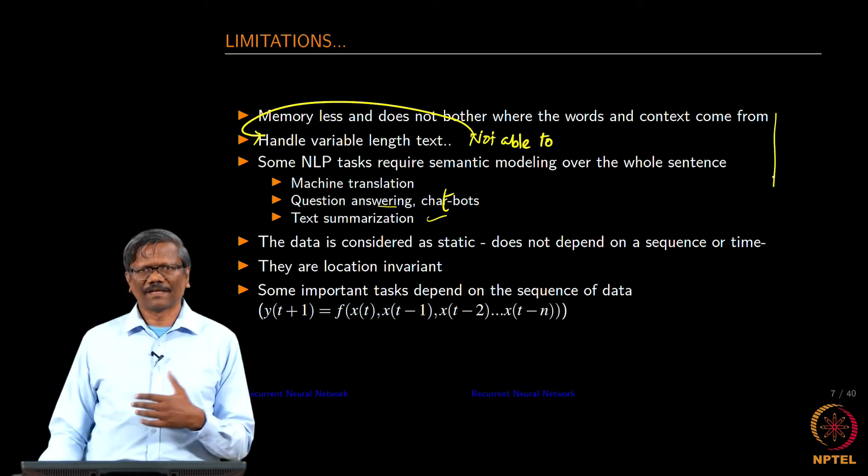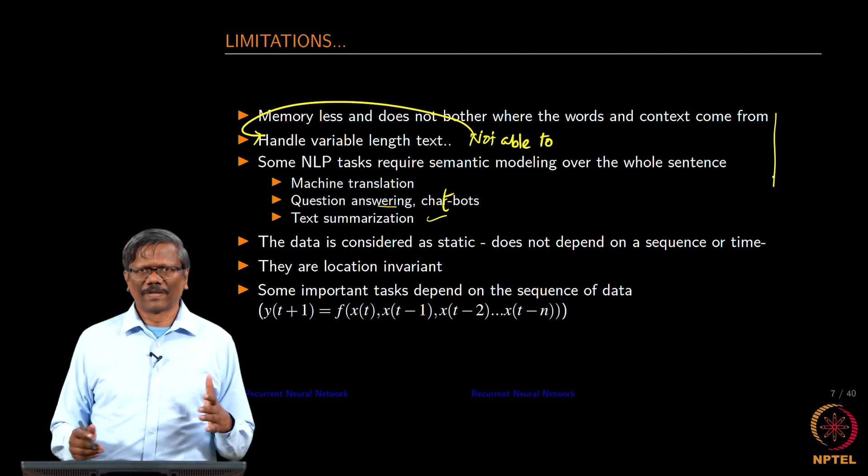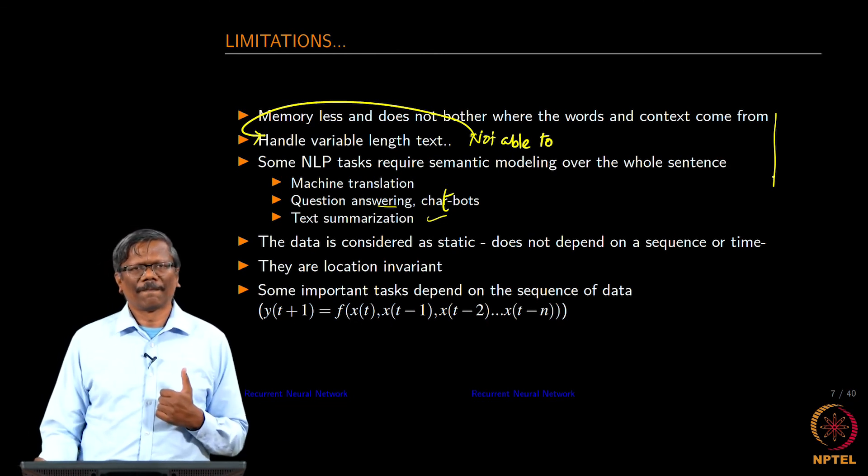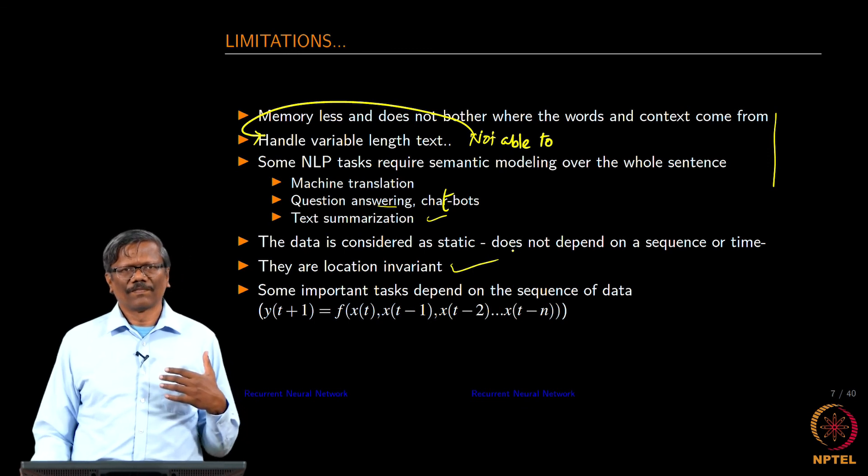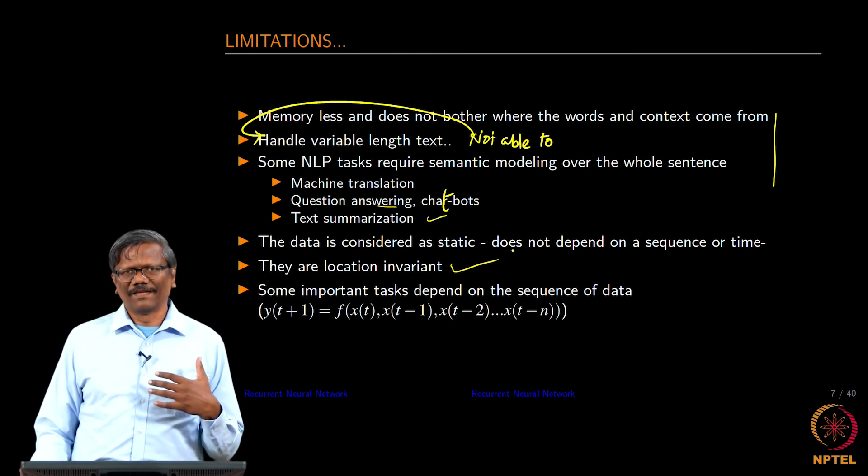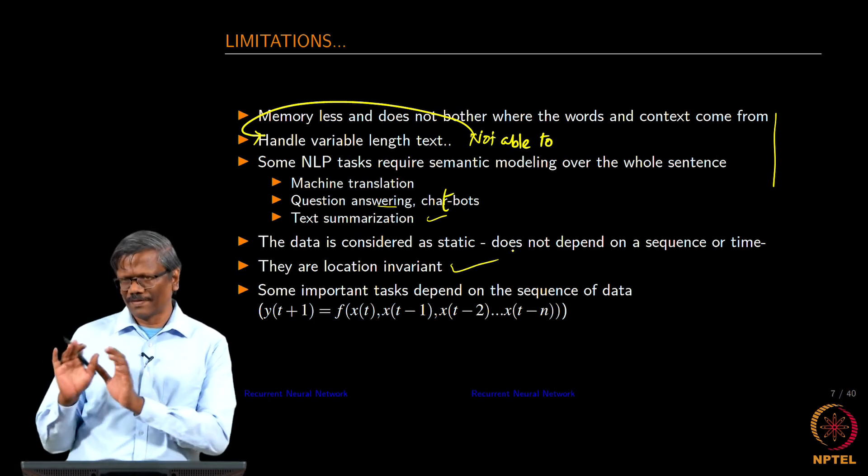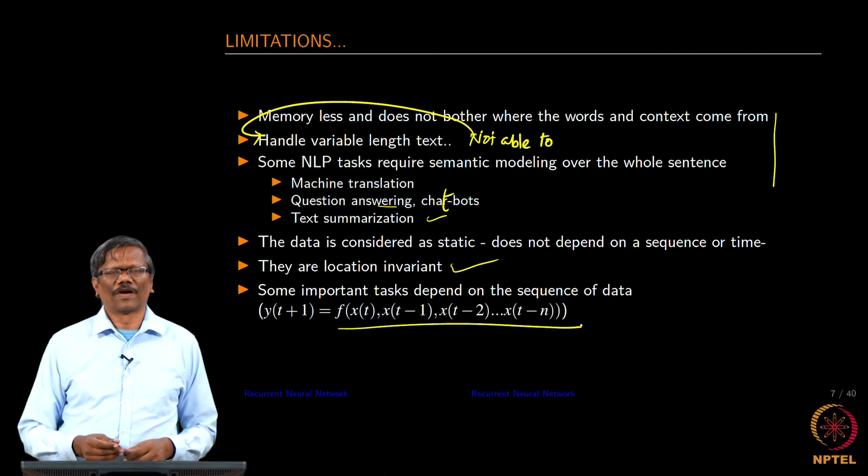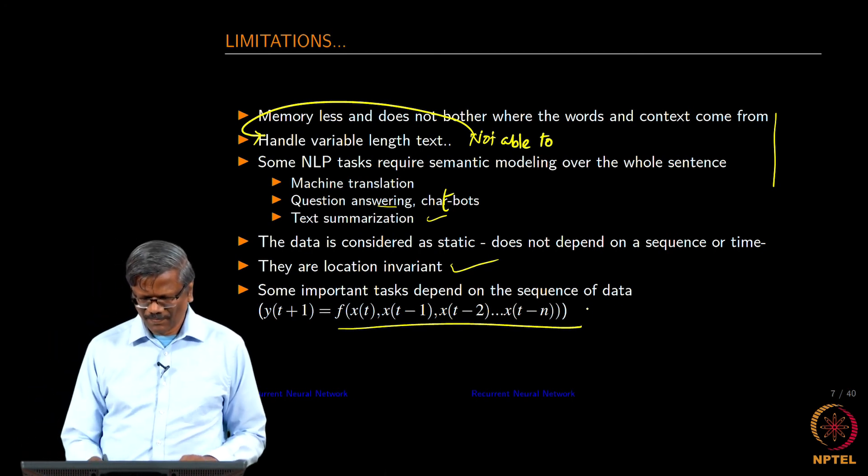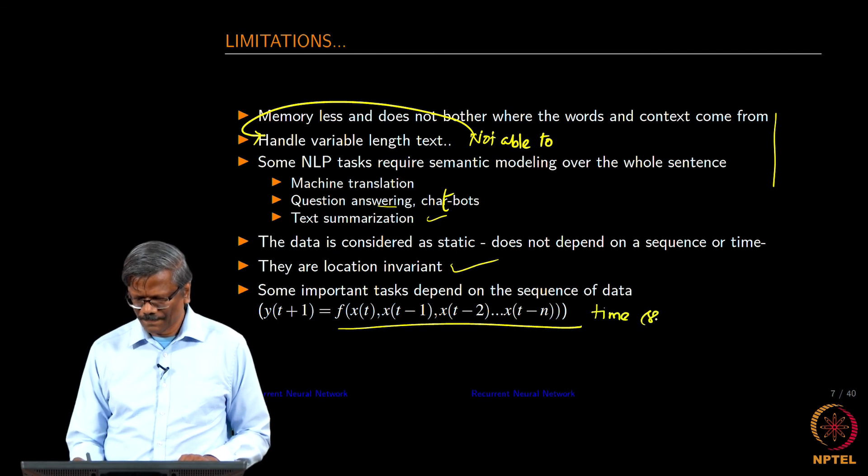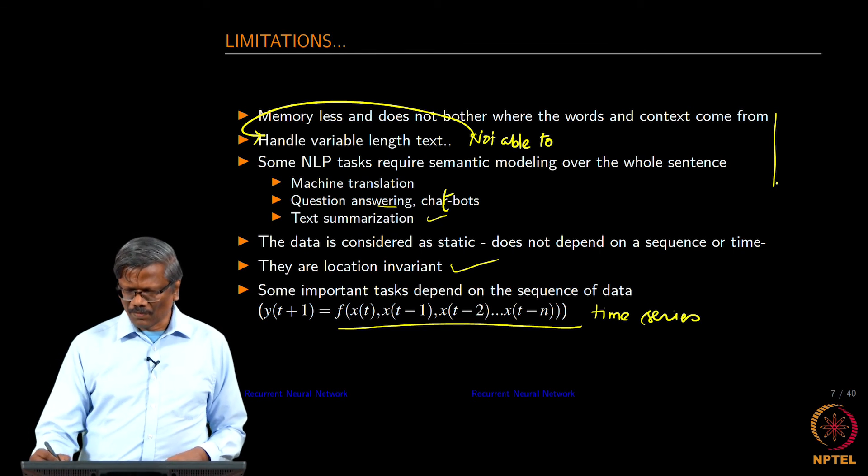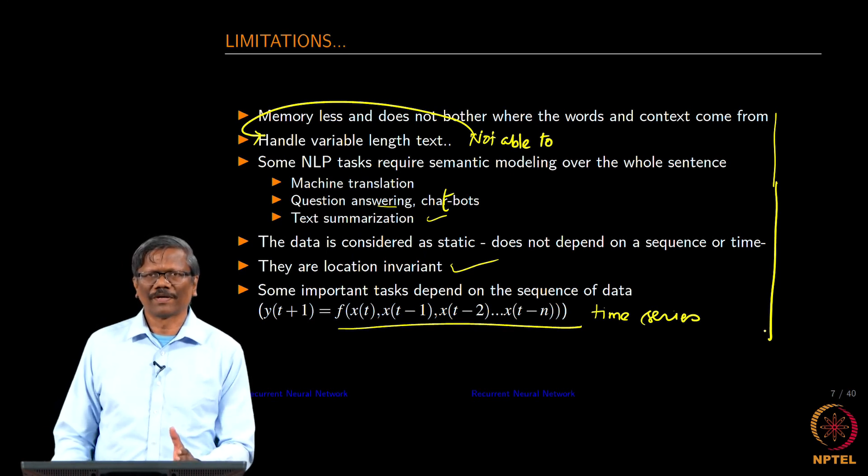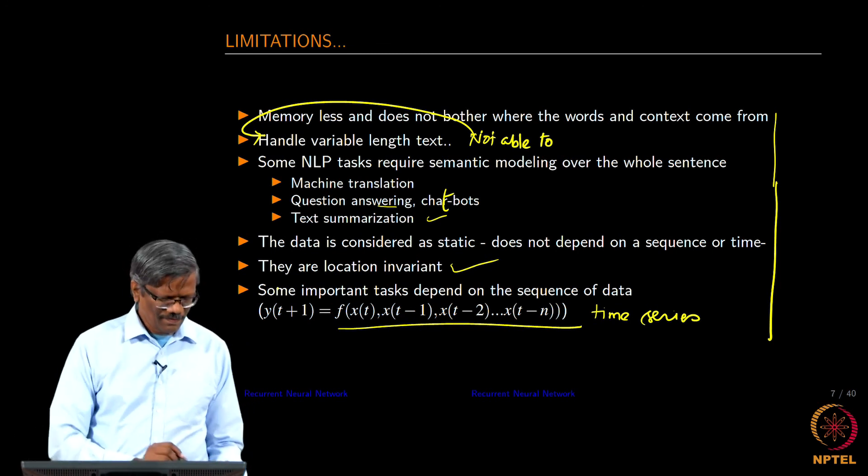And then we consider this data as static, we do not really care about the sequence as I mentioned earlier. We do not care about whether it is a sequence of words or it is time series. And then the location of the word is invariant. The location is not really a problem when you want to train, but in certain cases locations are important. We should be able to process sequences which are like a time series. Can we get to this level of solving all these problems that we are talking about in the model that we are going to be discussing today?